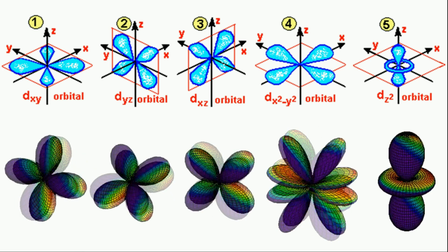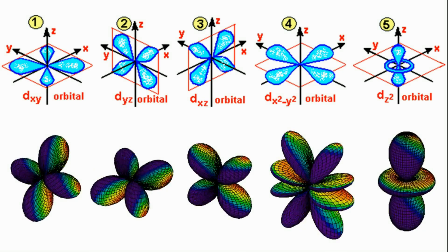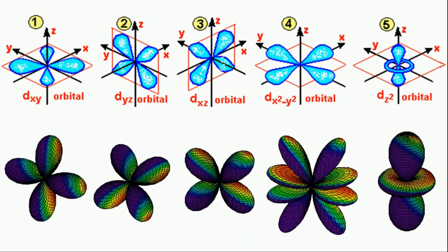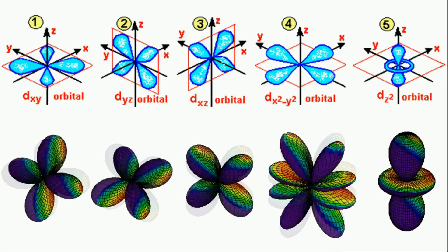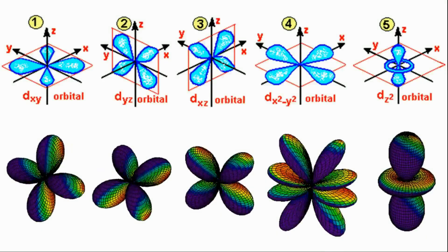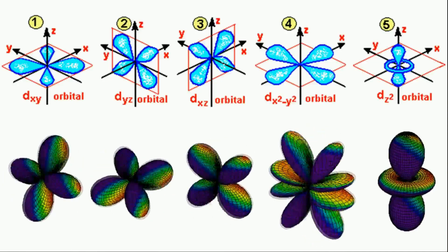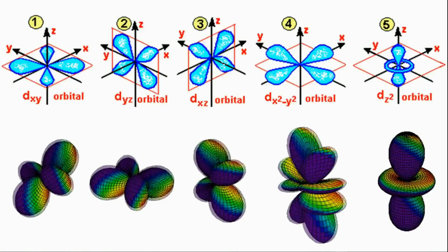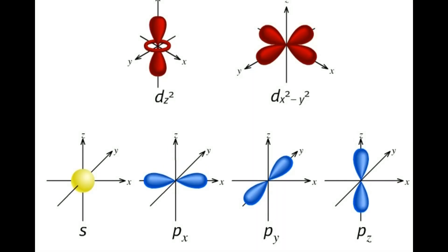But dx square minus y square and dz square will not look the same. Although these two orbitals look totally different, what they have in common is that their loops point along the various axes. That's the difference from these three where loops point in between the axes. The dx square minus y square orbital looks exactly like the first group apart on x and y axes, not in between them. The dz square looks like a p-orbital wearing a collar, the main loop points along the z-axis.